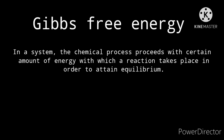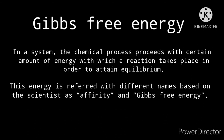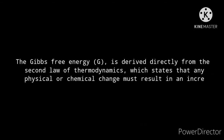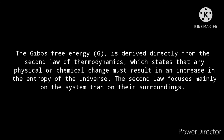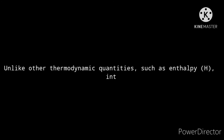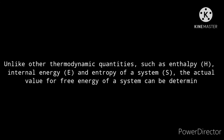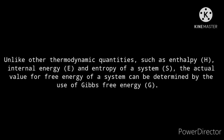Gibbs free energy. In a system, a chemical process proceeds with a certain amount of energy with which a reaction takes place in order to attain equilibrium. This energy is referred to by different names based on scientists — as affinity and Gibbs free energy. The Gibbs free energy is derived directly from the second law of thermodynamics, which states that any physical or chemical change must result in an increase in the entropy of the universe. The second law focuses mainly on the system rather than on the surroundings. Unlike other thermodynamic quantities such as enthalpy, internal energy, and entropy, the actual value for free energy of a system can be determined by use of Gibbs free energy.